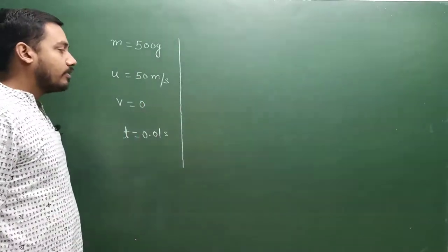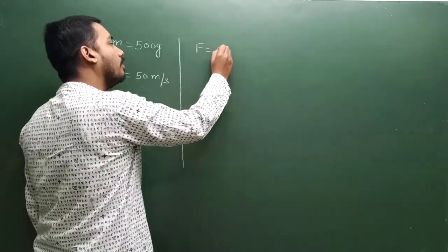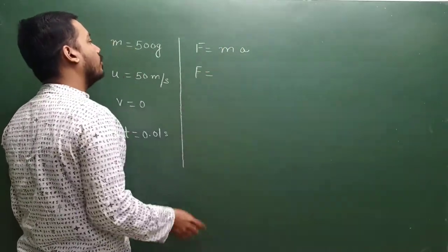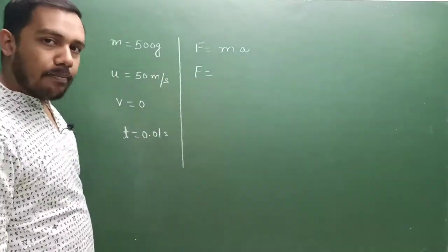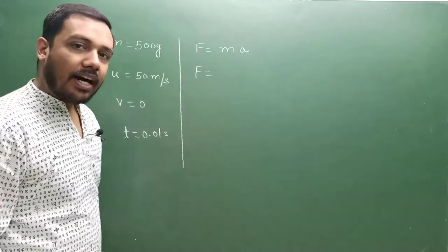Kya formula hota hai force ka? m into a. F is equal to m into a. F is equal to mass kis me diya hai, gram me isko apan convert kar lenge kilogram me. 500 gram matlab aadha kilo hota hai.